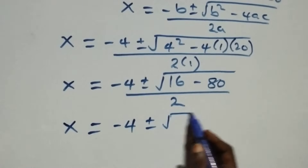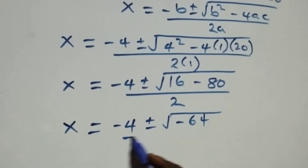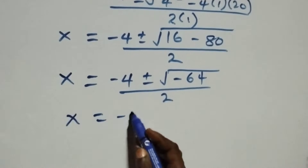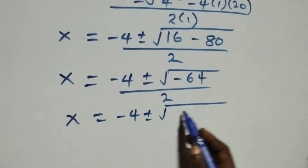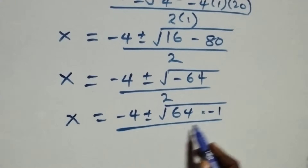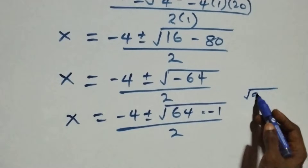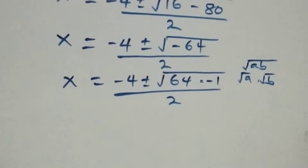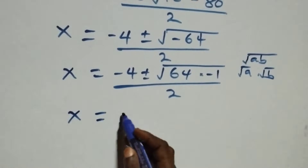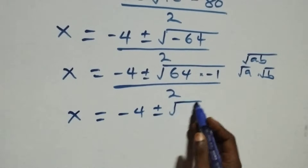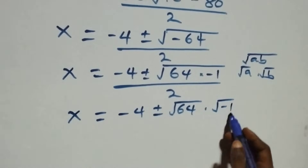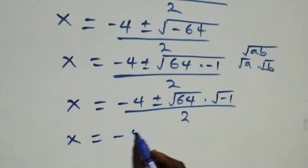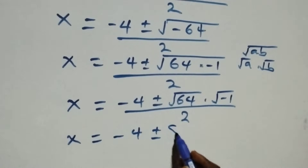We can rewrite that as x equals to minus 4 plus or minus square root of negative 64, all over 2. And when we have root of a times b, we can write that as root a times root b. So this becomes x equals to minus 4 plus or minus root 64 times root of minus 1, all over 2. Root 64 is 8, and root of minus 1 is i, so x equals to minus 4 plus or minus 8i, all over 2.